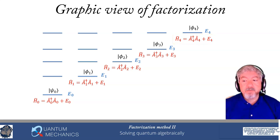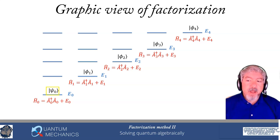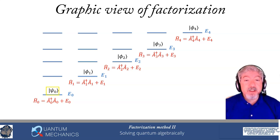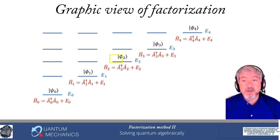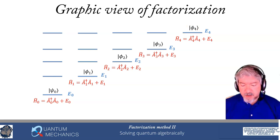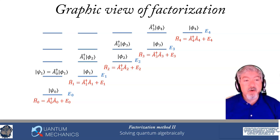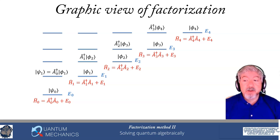For each one of those Hamiltonians, we find the ground state. The ground state of our initial problem comes from a subsidiary condition of Â0 acting on ψ0 equals zero. We get similar ground states for each of our auxiliary Hamiltonians — φ1 satisfies Â1 acting on φ1 equals zero, and so forth.